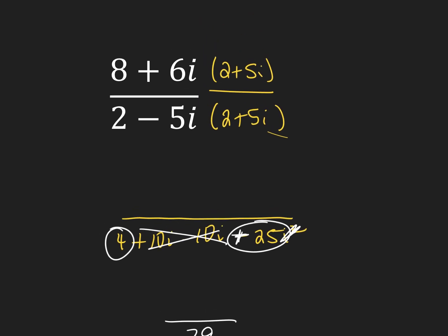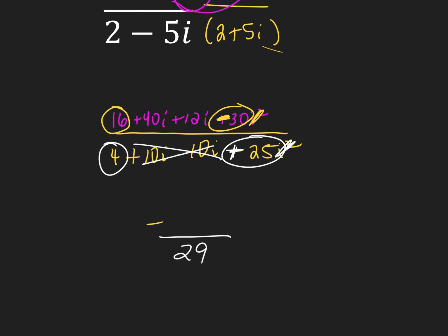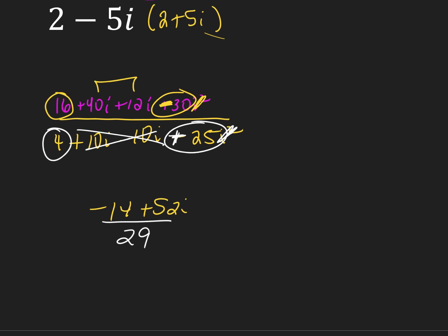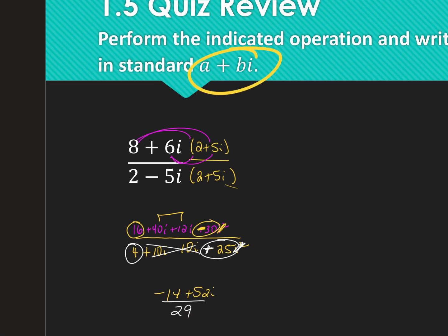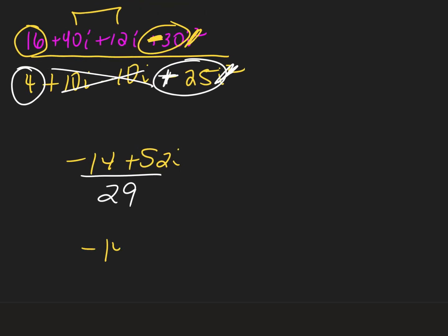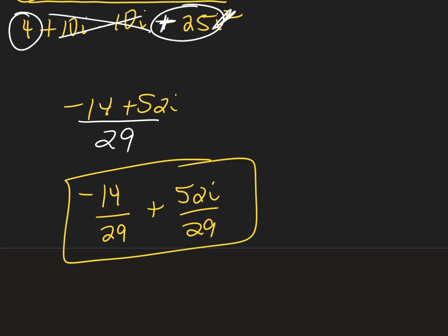So now we can go ahead and simplify the top. 8 times 2 is 16. 8 times 5i is plus 40i. 6i times 2 is plus 12i. And 6i and 5i is plus 30i squared. As soon as we see that i squared, we cross it off and change that sign in front. So I have 16 minus 30, giving me negative 14. And 40i and 12i is plus 52i. To write it in standard a plus bi form: negative 14 over 29 is my real part, plus 52i over 29 is the imaginary part. Neither of those simplifies, so we're good to go.